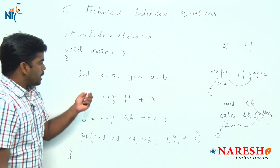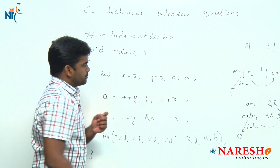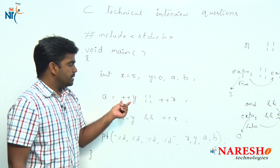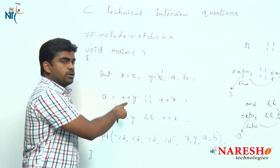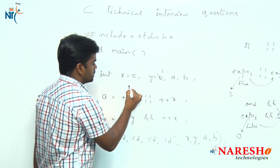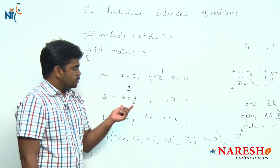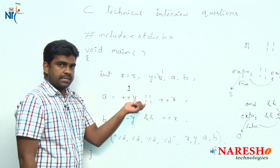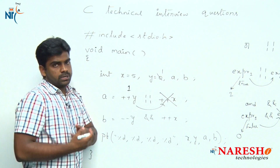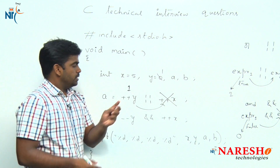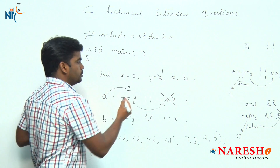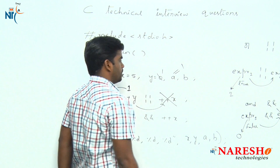Now, according to those rules, let's execute this program. x value is 5, y value is 0. The first expression is ++y — since it is pre-increment, the value becomes 1 and is substituted. It checks whether 1 is true, and it is true. So for the OR operator, if the first expression is true, it will not go and execute the second expression. So ++x will not execute and x value will not be increased. The true value is stored in a, so a value is 1.